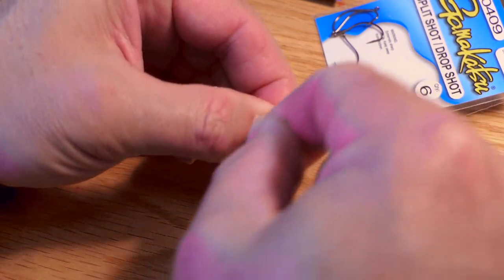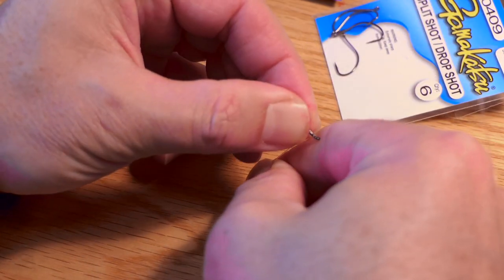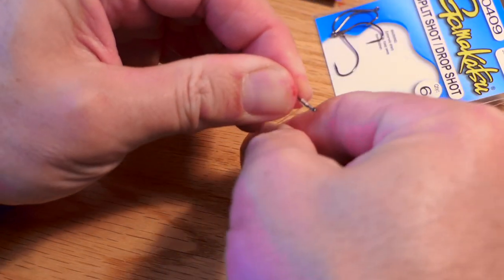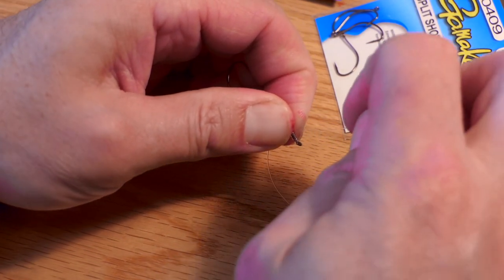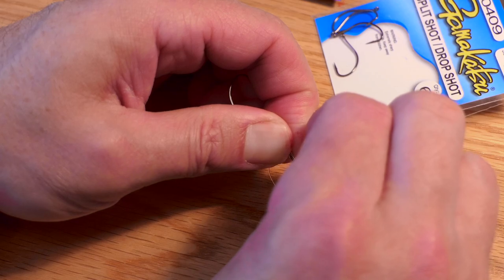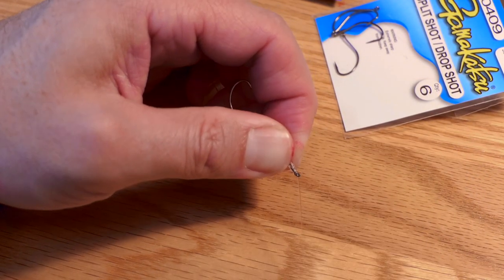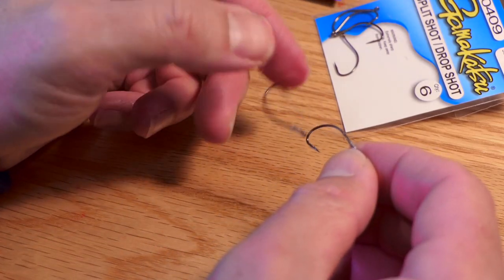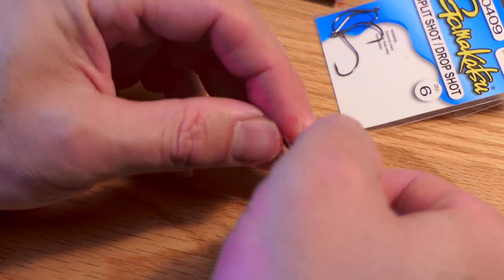So I just set it in place. Repeat the same snell knot. Six, seven wraps. Hold it in place, bring the other tag in back around. Hard to do when it's away from my body and under the camera. Tighten it up. There you go. So that is all set. I'm going to just trim off that tag in back there.